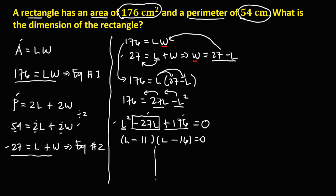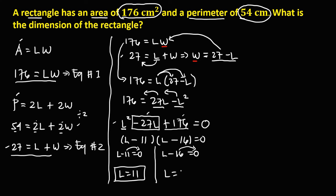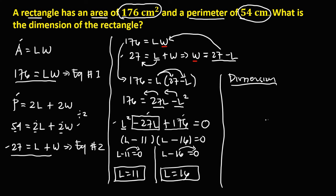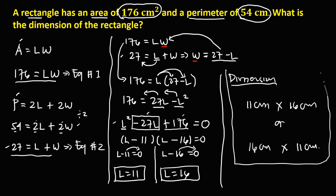Equating each factor to 0: L minus 11 equals 0 gives L equals 11, and L minus 16 equals 0 gives L equals 16. Therefore, the dimension of the rectangle is 11 cm by 16 cm, or 16 cm by 11 cm. This is the final answer.